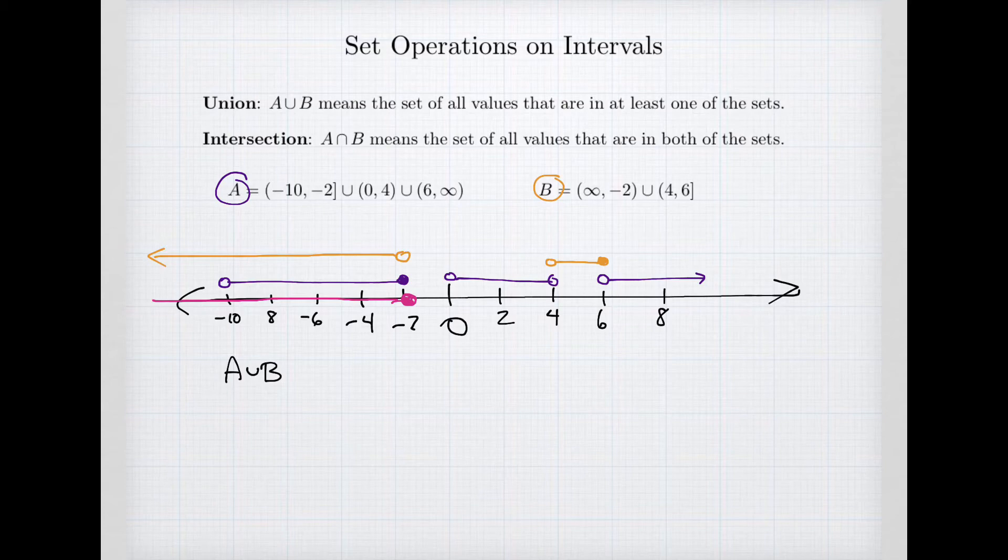Now we encounter a gap. From negative 2 to 0 there's no point, and starting at 0 we discover we have an interval beginning. So all the way until I get to 4. Well what about 4? Well 4 is not in either set. So I need to leave a hole in my set, and then we keep going because we have our set B continuing and it goes all the way to 6.